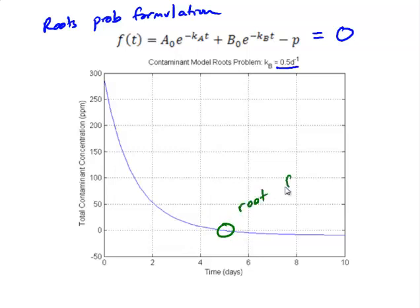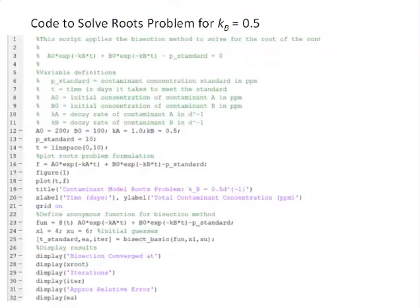So there's our root for the specific case where KB is equal to 0.5. Now what we want to do is first go through a bisection method application to find that root, and then expand that to use this idea to generate that graph of the time to reach the standard as a function of KB. So first let's look at this single application of the bisection method to solve this roots problem.